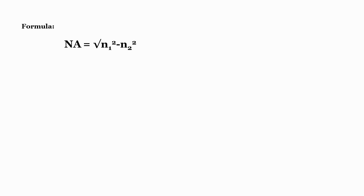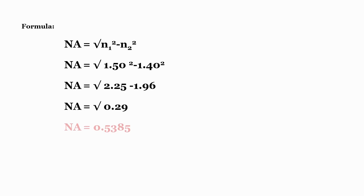For numerical aperture, the formula is √(n1² − n2²), and that calculation has already been done. Taking √(1.50² − 1.40²) and doing the calculations, the numerical aperture NA = 0.5385. This is how the numerical aperture and acceptance angle are calculated in the case of a fiber optic cable. Thank you.